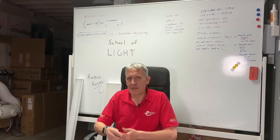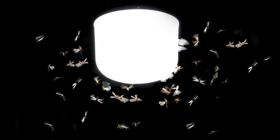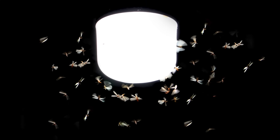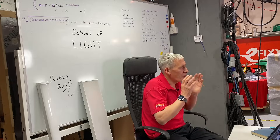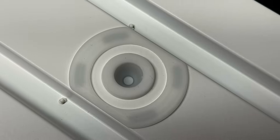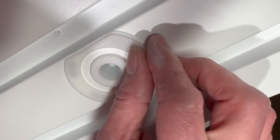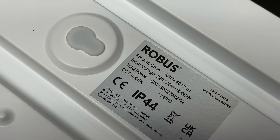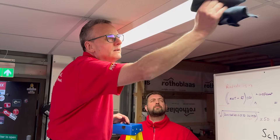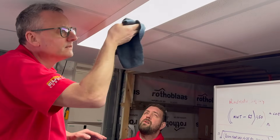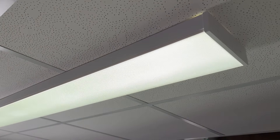In our biology lessons, we learned that light fixtures effectively attract insects, a common occurrence in older lighting fixtures where bugs would get trapped inside the diffusers. The Scholar Plus offers multiple pre-drilled mounting and cable entry options, all sealed with gaskets, to achieve an IP44 rating for dust and moisture protection. The fixture's smooth surfaces make it easy to keep clean. With its outstanding optical performance, versatile power options, and user-friendly installation features, the Robus Scholar Plus stands out as the perfect lighting solution for office and educational settings.